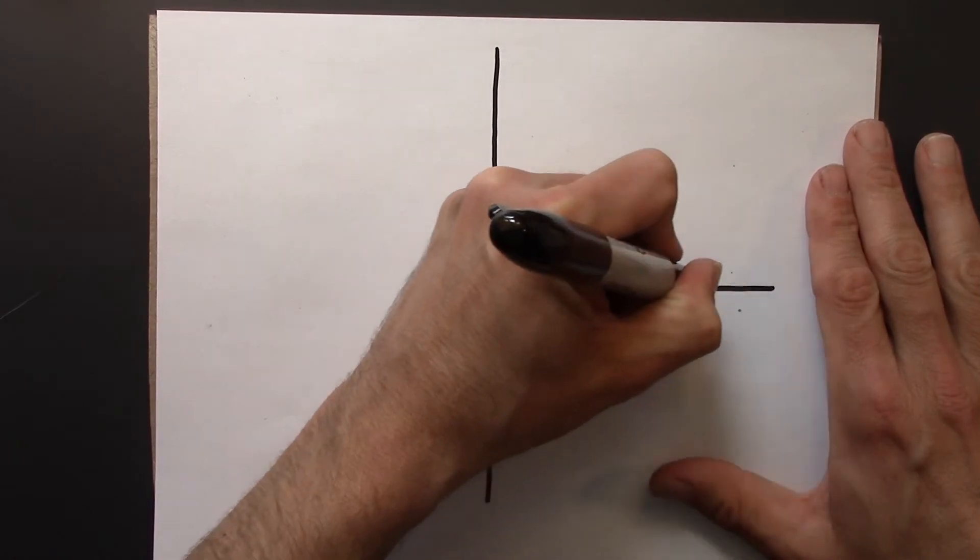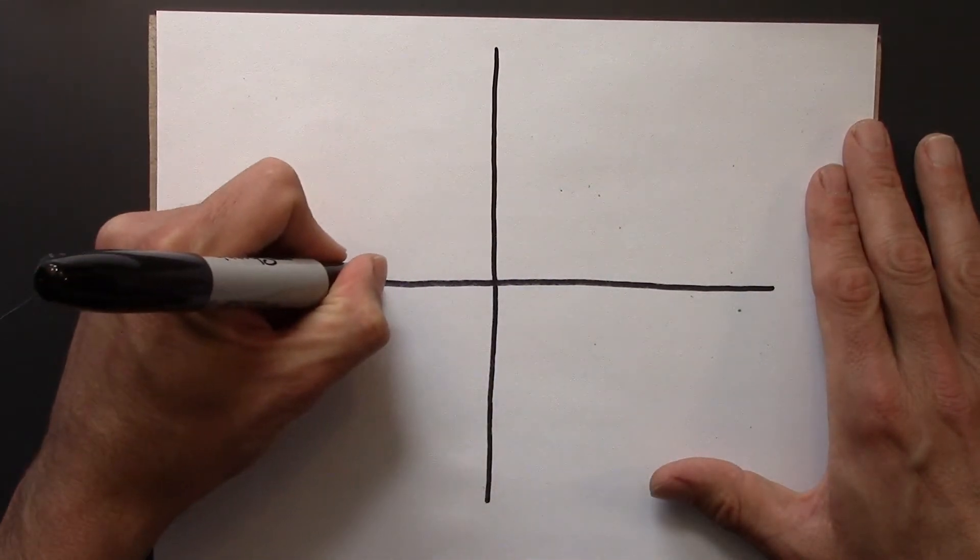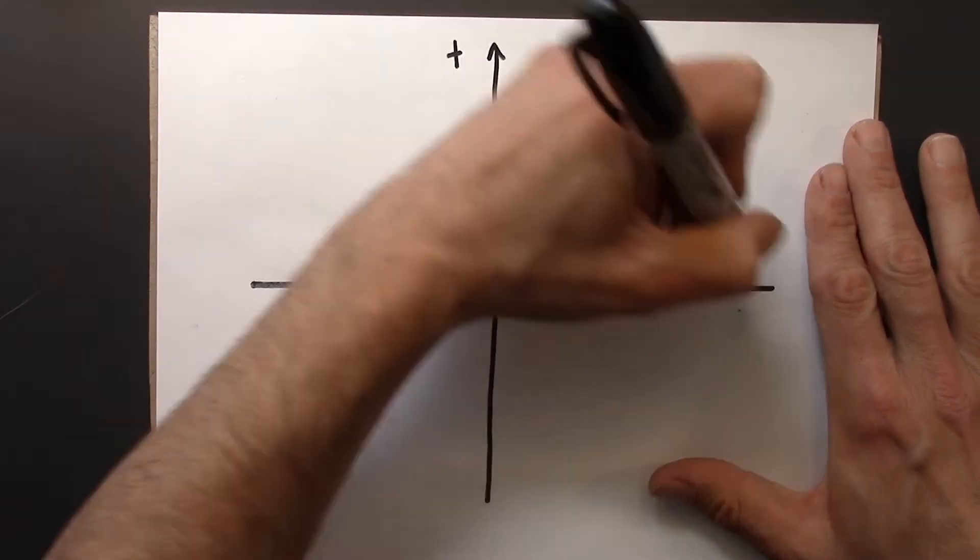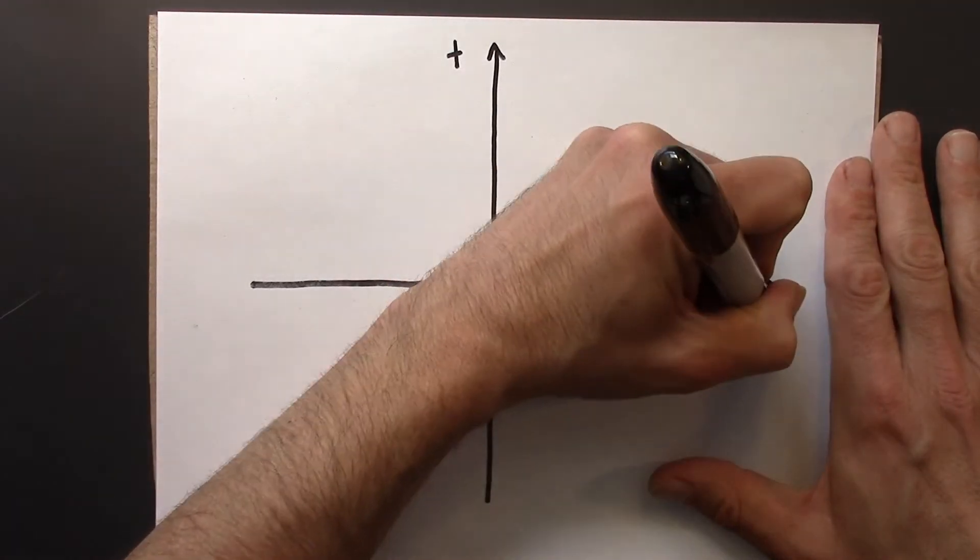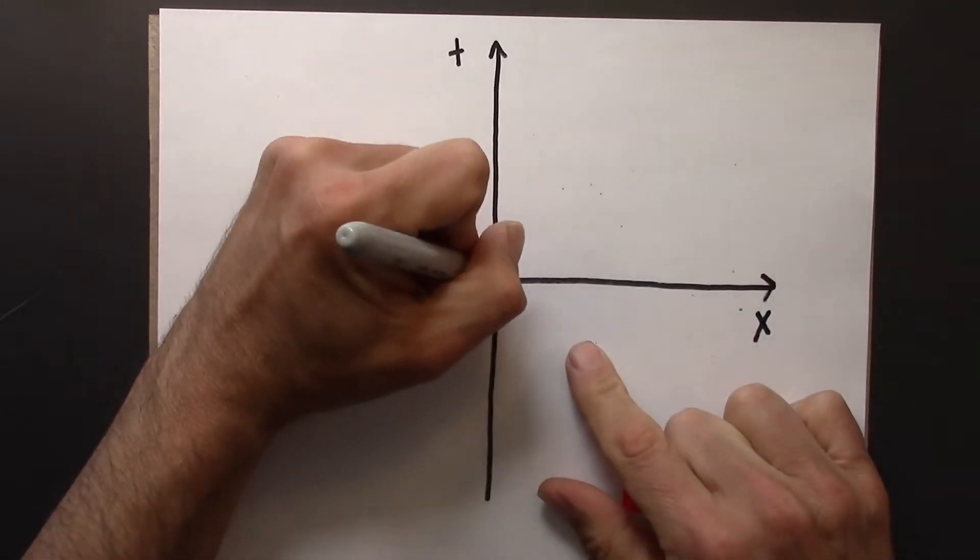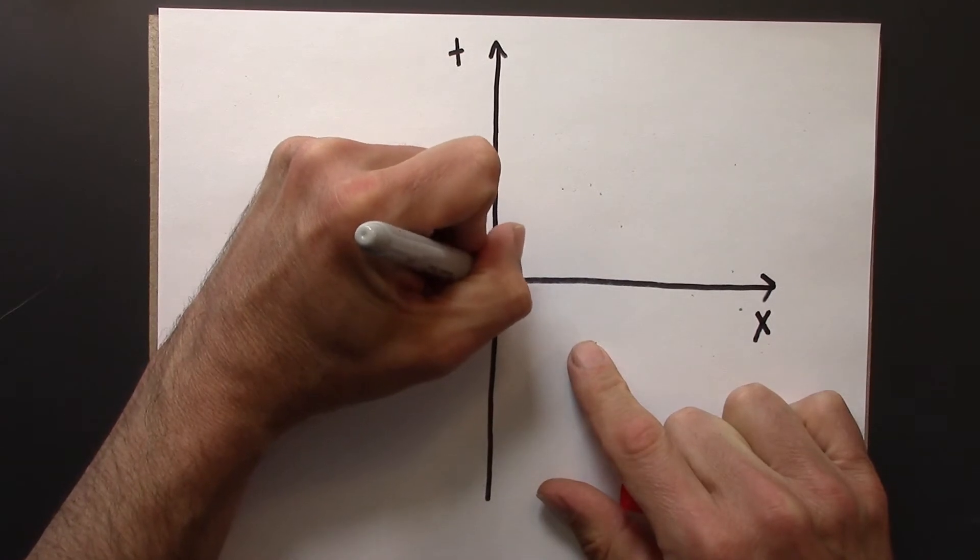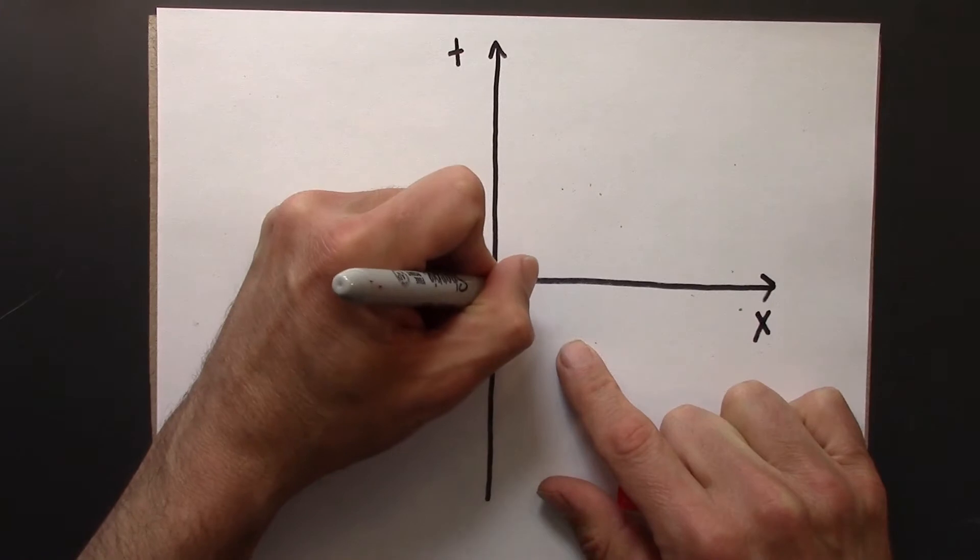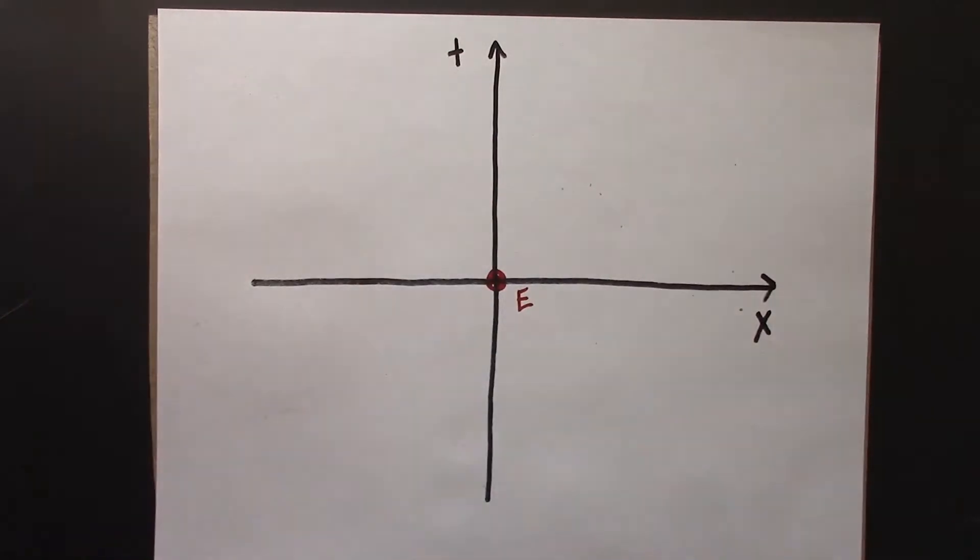Alright. So here's a space-time diagram, we've got t, and we have x. And we'll have an event that takes place at the origin, and we'll call this event, I don't know, e for event.